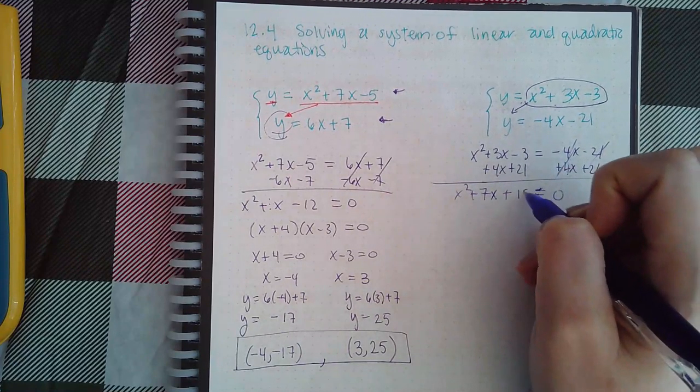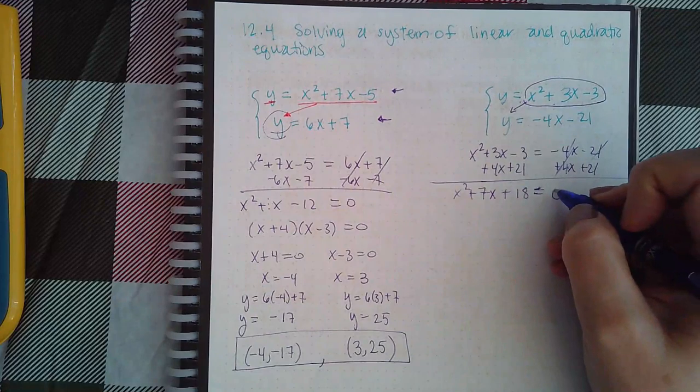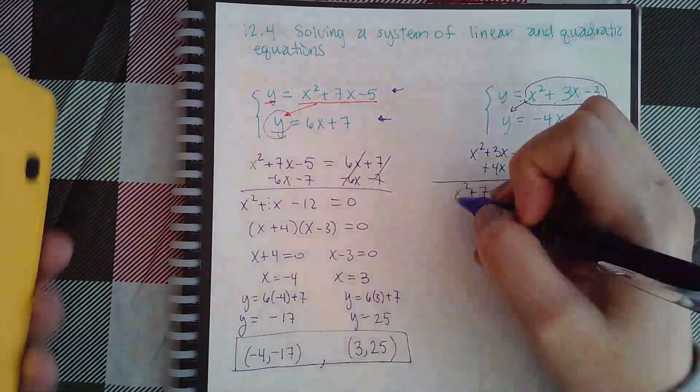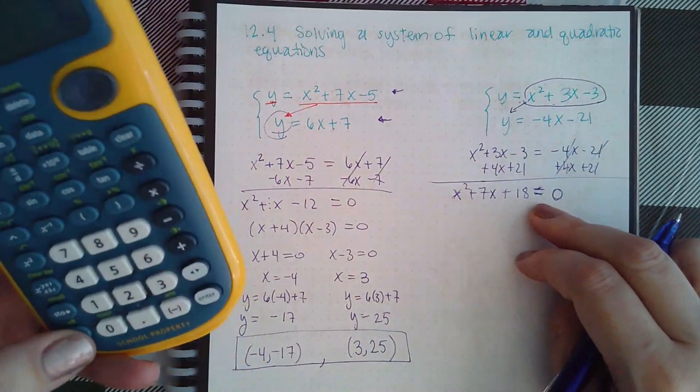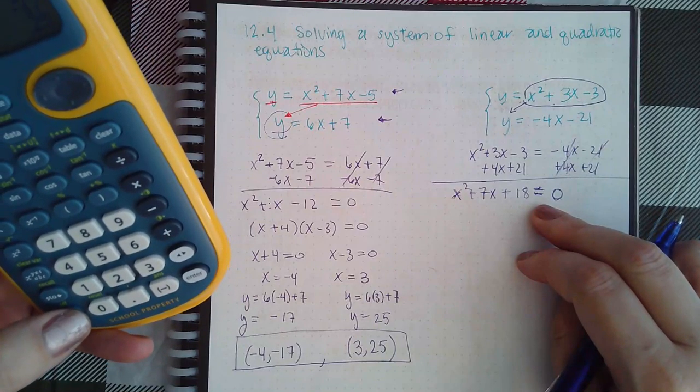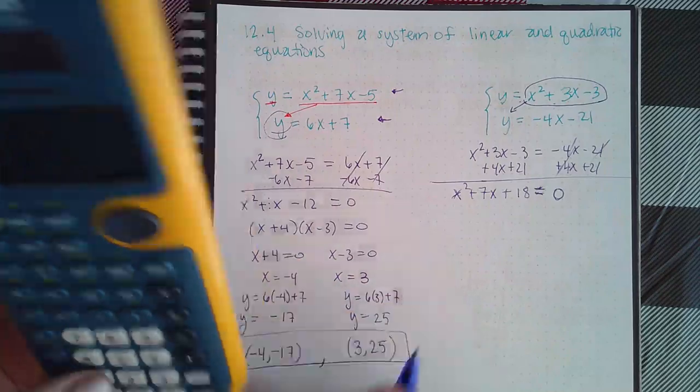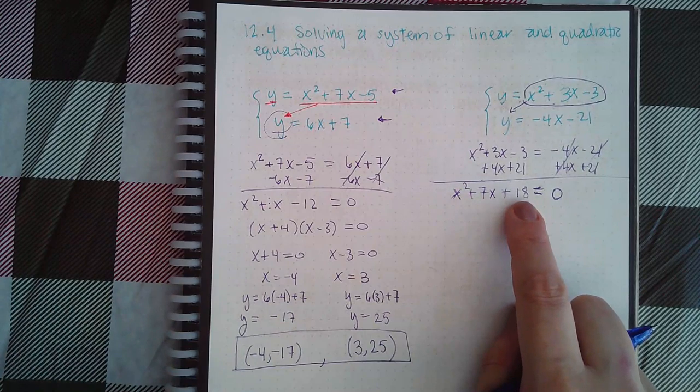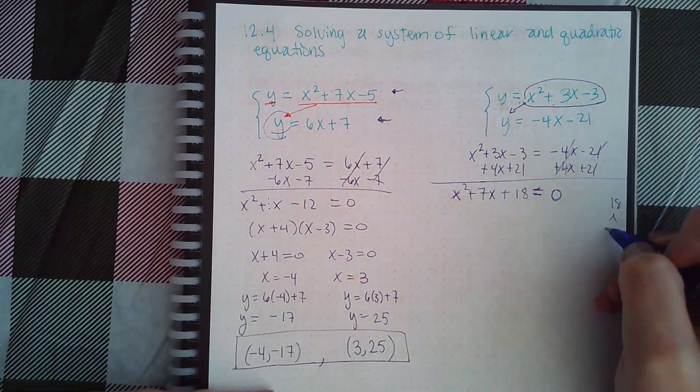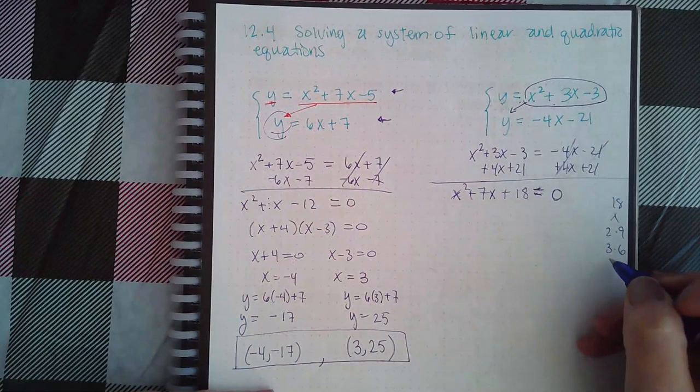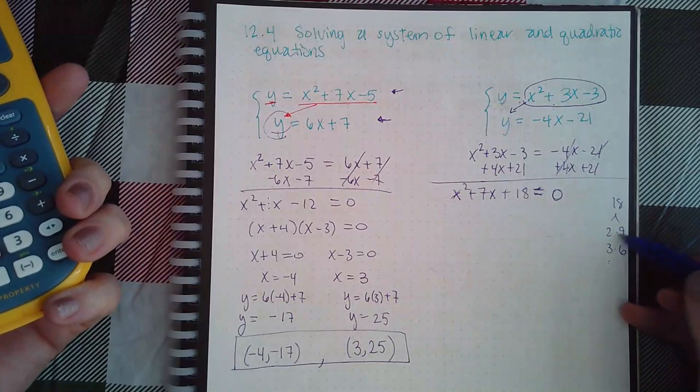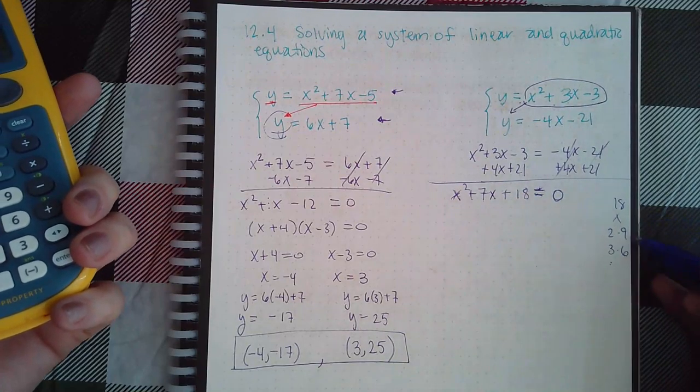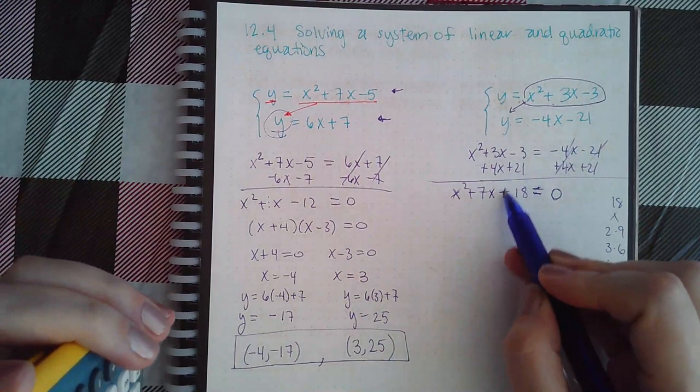Now this one, I don't think that I can factor. If it were a negative 18, I might have been able to factor it, but not when it's a positive 18. I know 2 times 9 and 3 times 6. These will add to give me 11, they would subtract to give me 7, and I can't subtract. I'm supposed to be adding, so I'm going to use the quadratic formula.